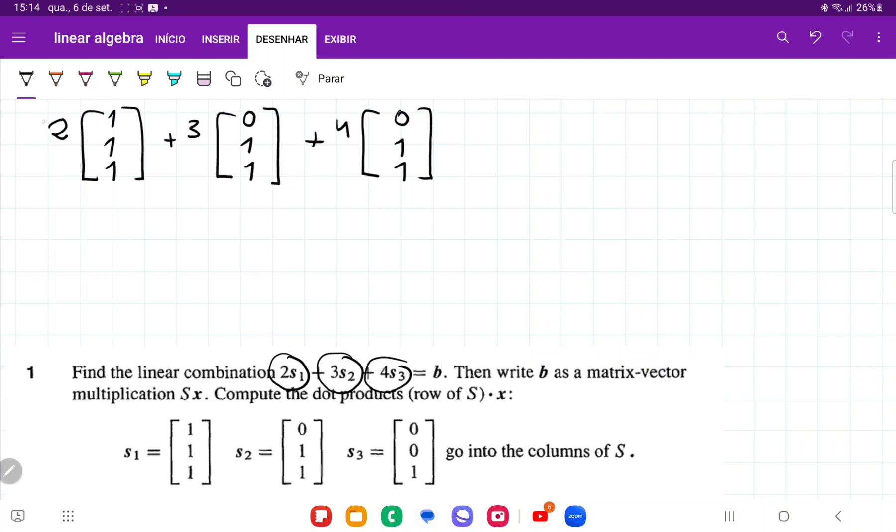I've put in 2 times the vector s1 plus 3 times the vector s2 plus 4 times the vector s3, and this is going to give us b. So b is going to be b1, b2, b3. Let's find the components of b.